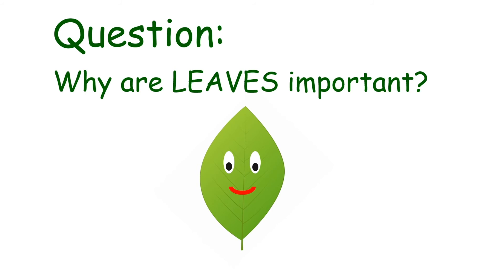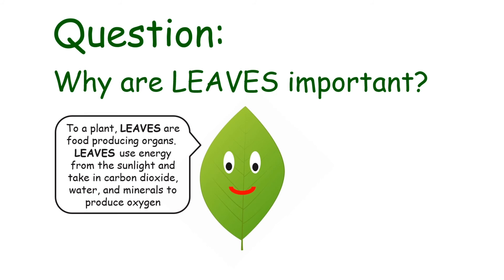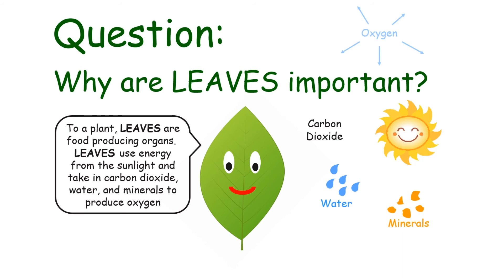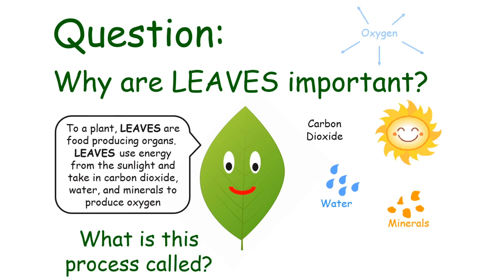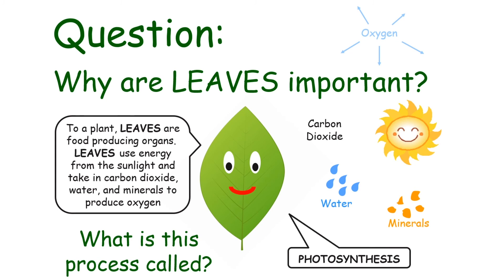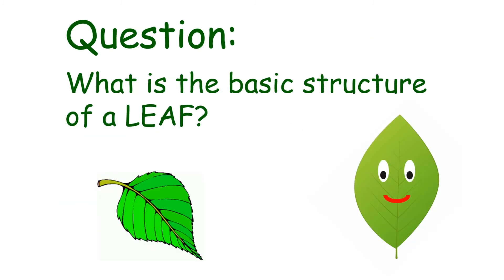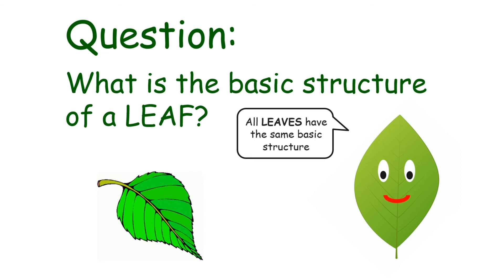Why are leaves important? To a plant, leaves are food-producing organs. Leaves use the energy from sunlight, taking in carbon dioxide, water, and minerals to produce oxygen. What is this process called? Photosynthesis. What is the basic structure of a leaf? All leaves have the same basic structure.